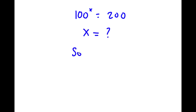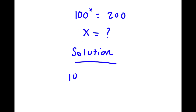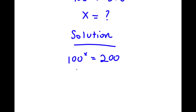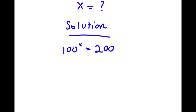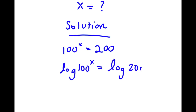For my solution, I first start with 100 to the power of x is equal to 200. Now I'm going to take the log on both sides. So I have log of 100 to the power of x is equal to log 200.